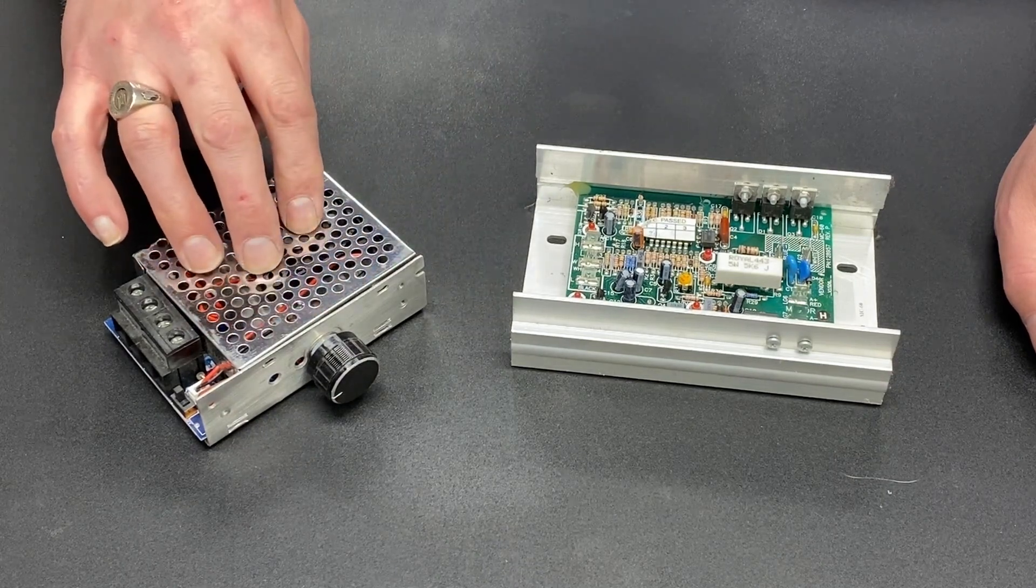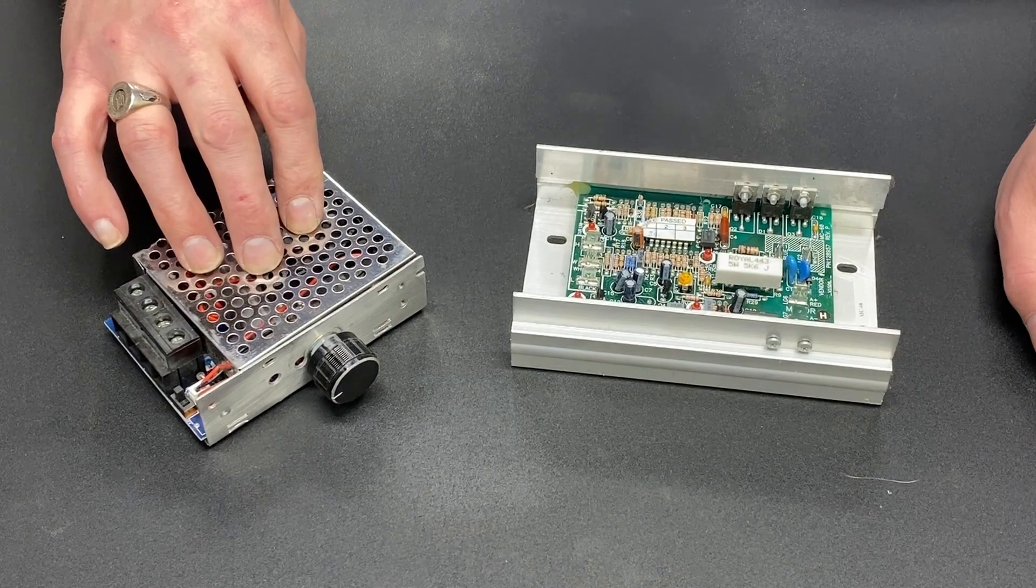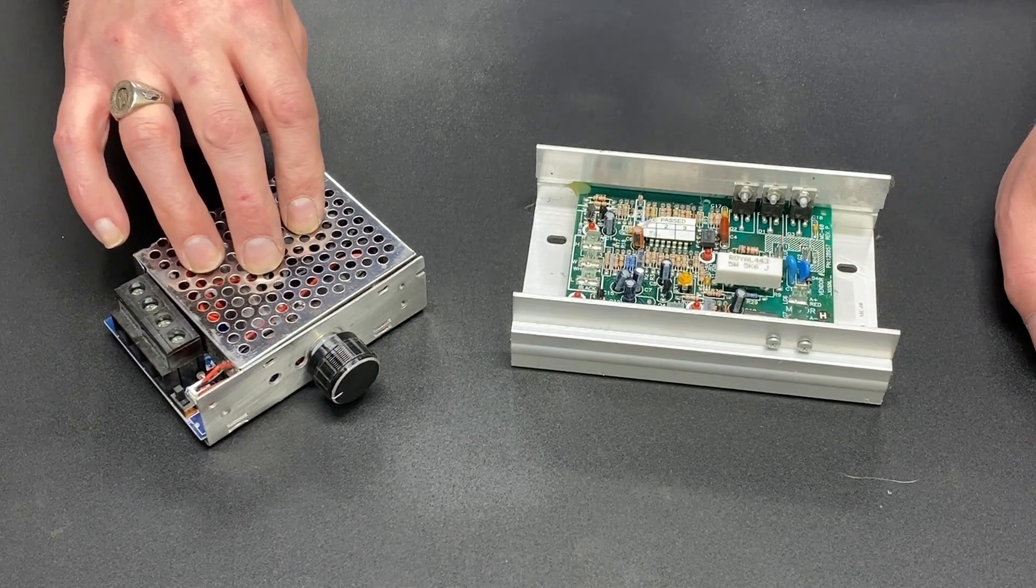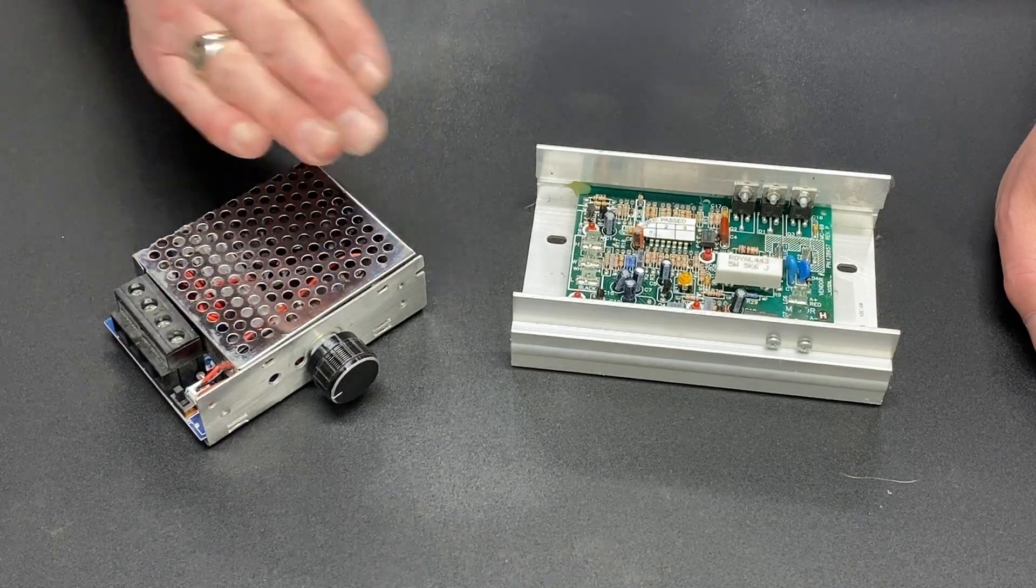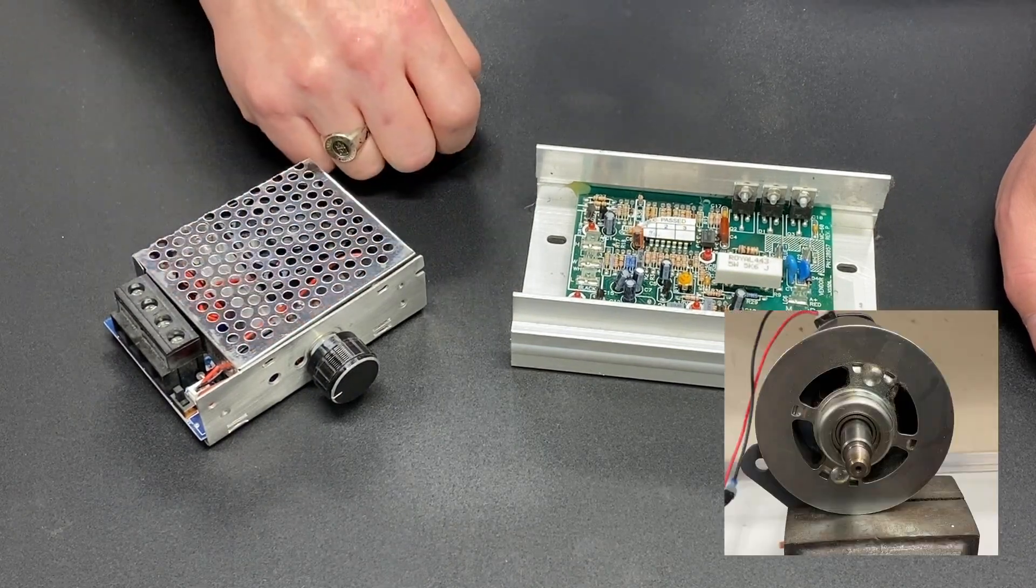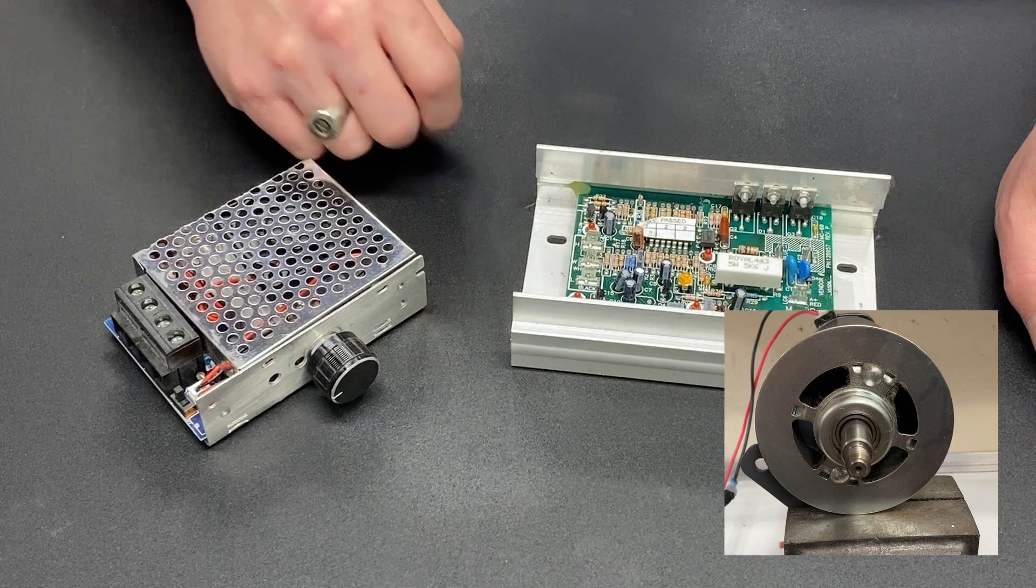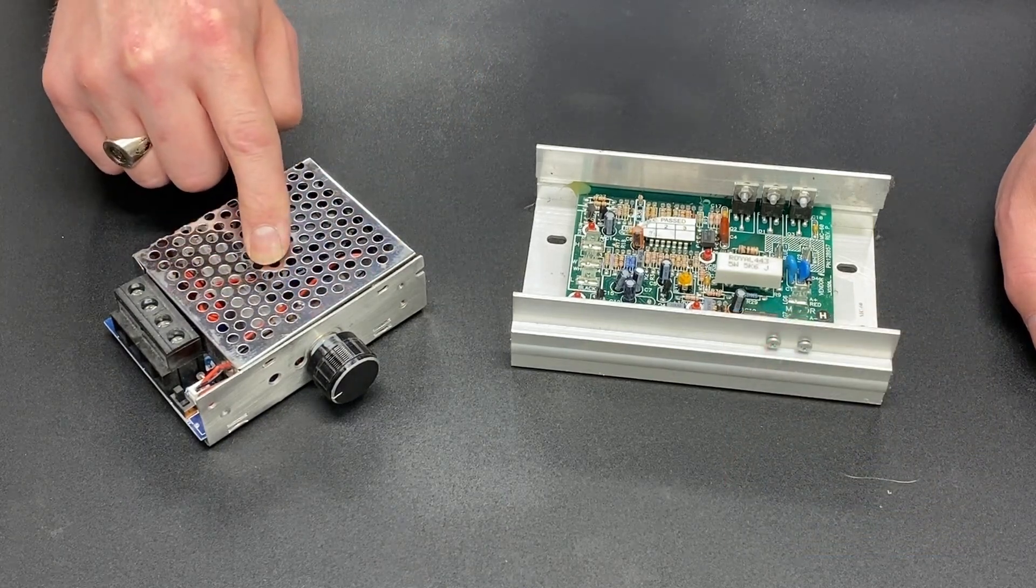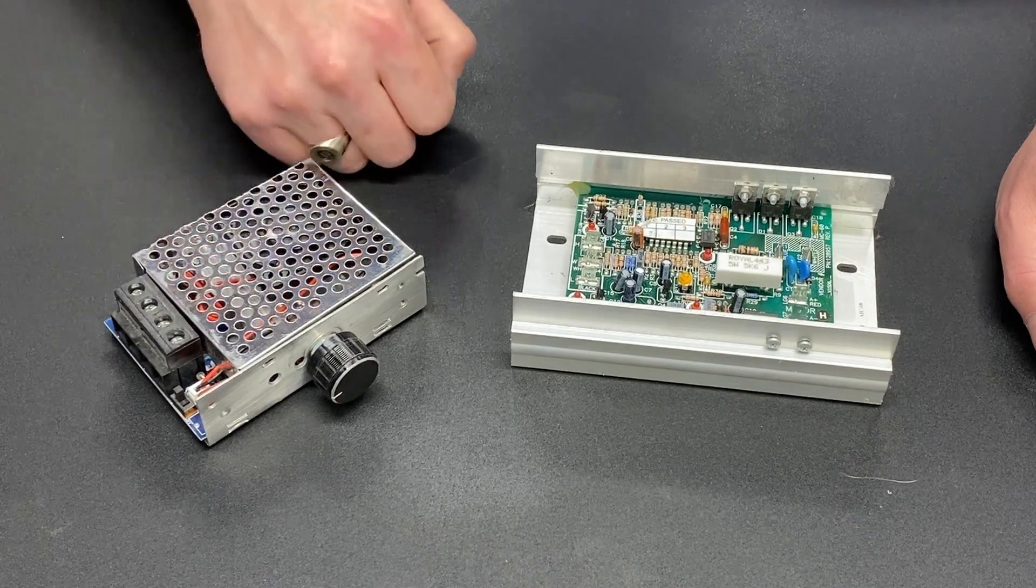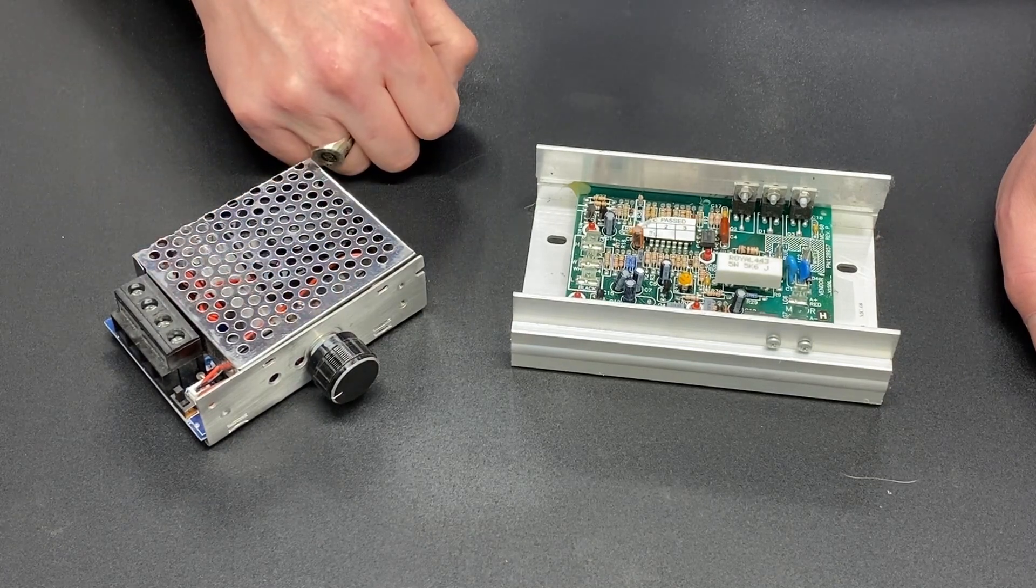Not all SCR voltage controllers are created equally. Cheaper ones don't put out the torque at lower RPMs. They will create a hesitation kind of bump start with the motor, so make sure you get a good one. But even so, this one I think I spent about $25, so it's not super expensive for the quality.